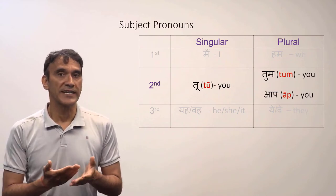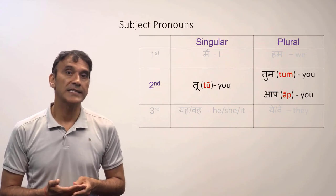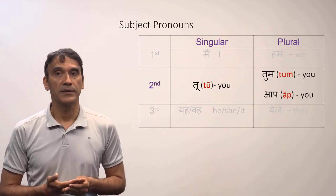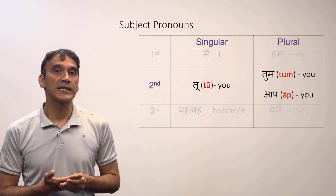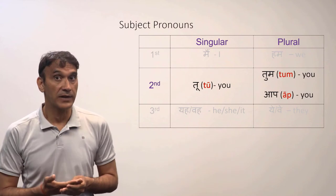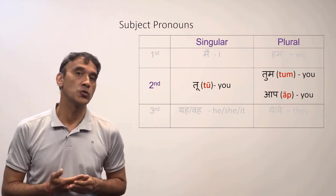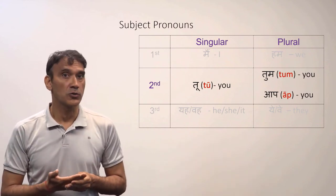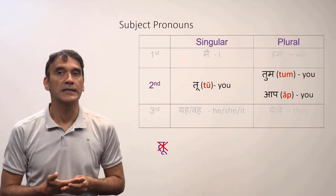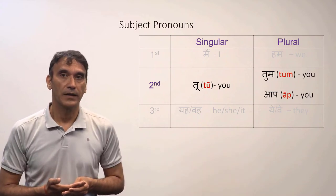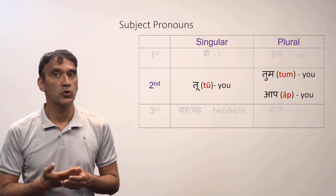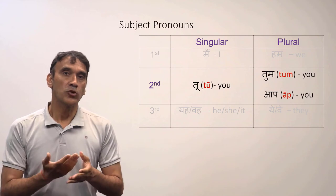For the second person, English has only one subject pronoun — 'you' — used for both singular and plural. Hindi has three second person pronouns. The first is 'tu,' which is the most informal way of addressing someone and can sometimes even be rude to use. Students are advised not to use 'tu' at all — completely avoid this form.